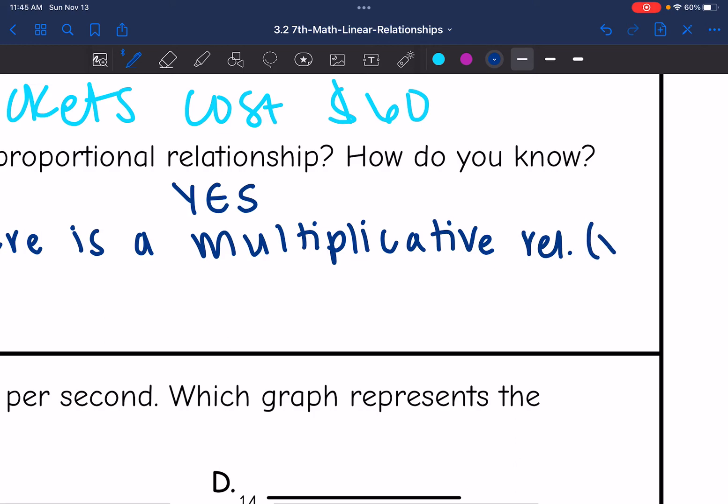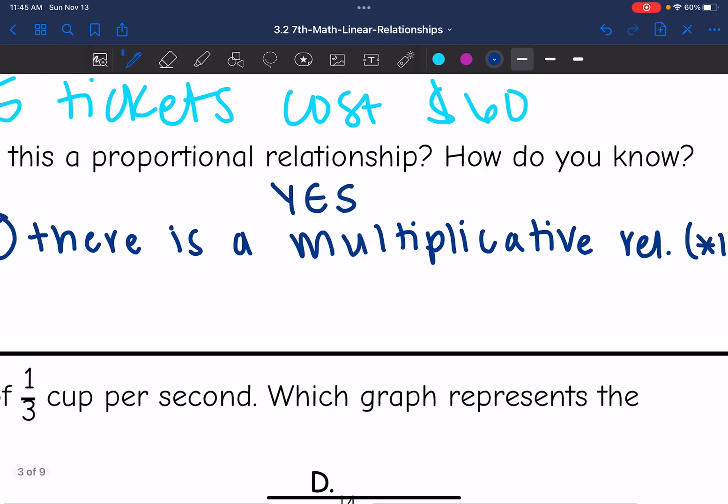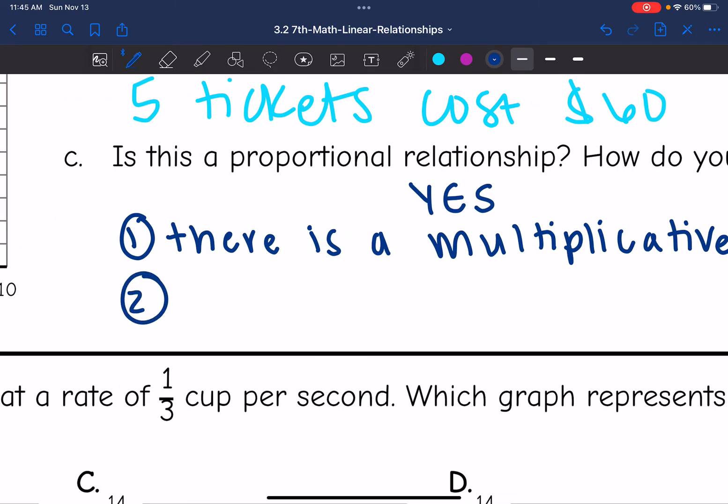We saw that times 12 throughout the whole table. And then reason number two is the graph would go through the origin, if we extended it.